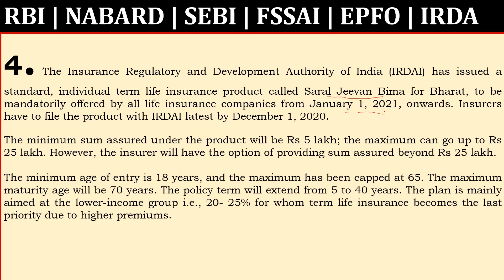Insurers have to file the product with IRDAI latest by September 1st, 2020. The minimum sum insured under the product is 5 lakh and the maximum is 25 lakh, though insurers have the option of providing sum assured beyond 25 lakh. Minimum age of entry is 18 years, maximum is 65 years, and maximum maturity age is 70 years. The policy term extends from 5 to 40 years. The plan is mainly aimed at the lower income group for whom term life insurance becomes the last priority due to higher premiums.